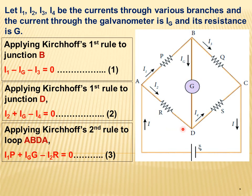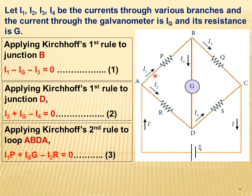Applying Kirchhoff's second rule to loop A-B-D-A: the currents give minus I1·P plus IG·G minus I2·R equals zero — this is equation 3. Here I1·P and IG·G are positive but we lose current at I2·R, so the sign is negative.